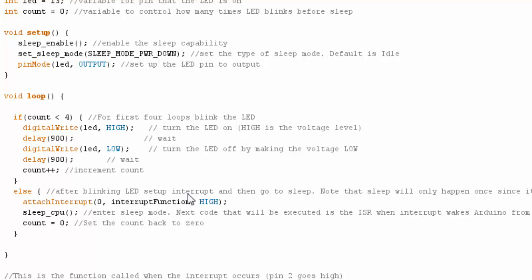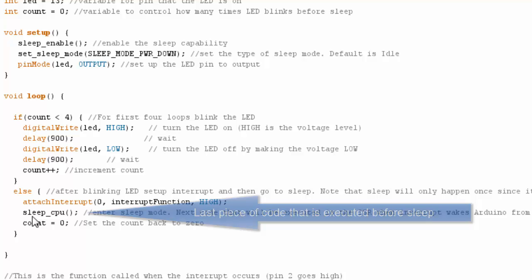Then if we look at this loop, I'm basically going to execute this loop four times, flash my LED, increment my count, and then once the count increments to three, and this is executed four times, I'm then going to create my interrupt. I'm then going to tell the Arduino to go to sleep, and then set my count back to zero.